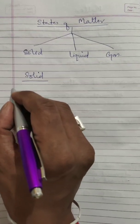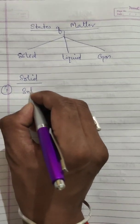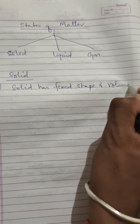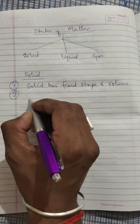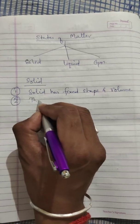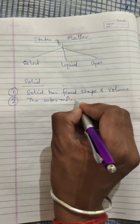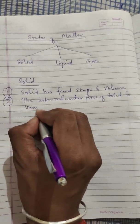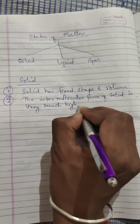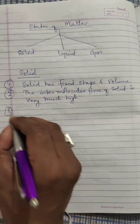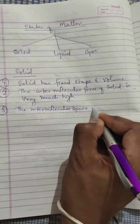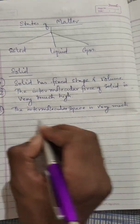First we will discuss about solid. There are certain properties of solid. The first property is solid has fixed shape and volume. The second property of solid is the intermolecular force of solid is very much high. The third point is the intermolecular space is very much less.